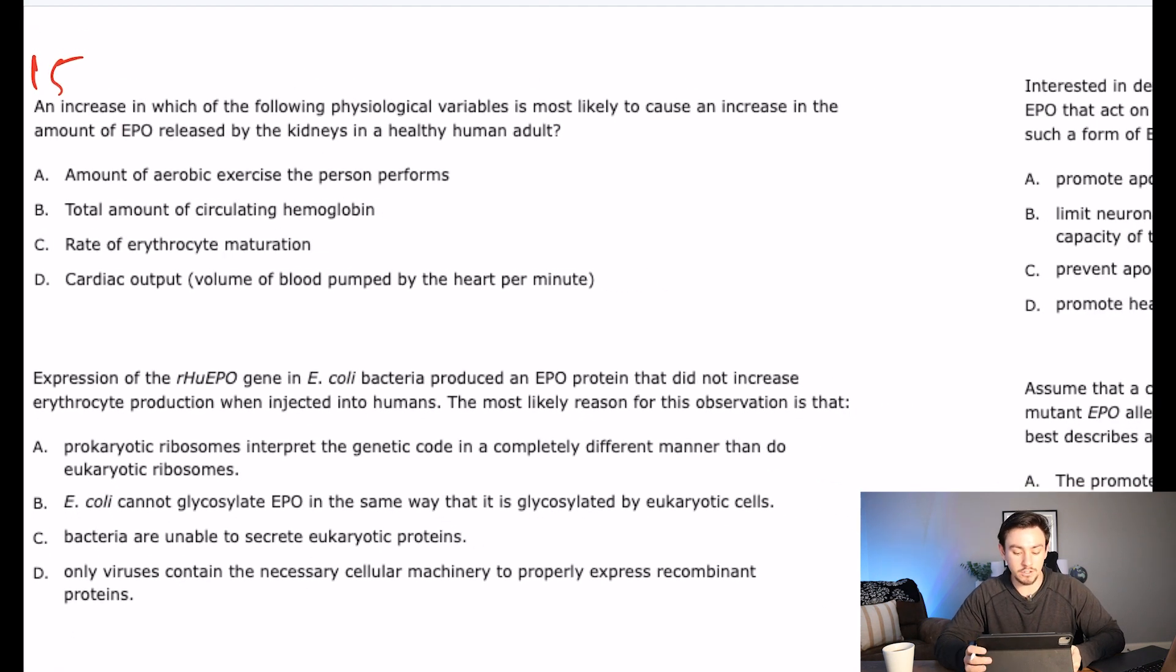So A says, if we increase—because remember the question stem says we're increasing it—if we increase the amount of aerobic exercise that a person performs. So if you start going for a run, yeah, probably that's going to decrease your oxygen. So A is going to decrease the amount of oxygen in your blood, which would in turn increase the amount of EPO. So maybe A. B says if we increase the total amount of circulating hemoglobin, would that increase or decrease the amount of oxygen in our blood? It'd probably increase it. So maybe not B.